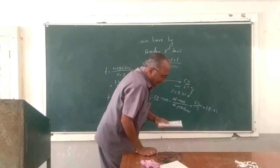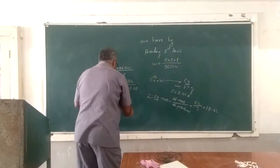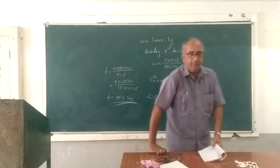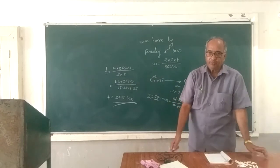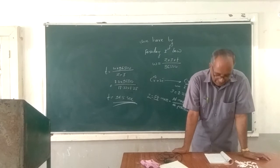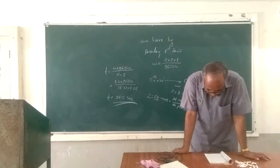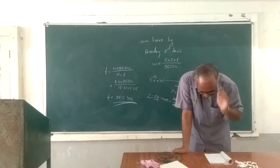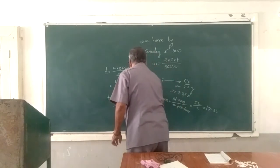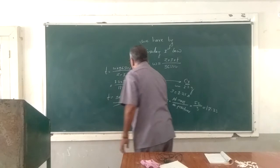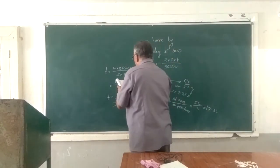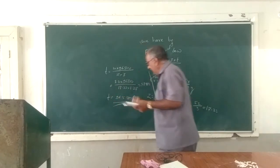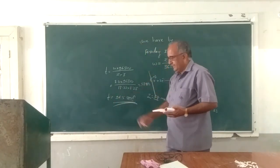When you simplify, the time taken for the deposition of 1.3 grams of chromium is 96.5 seconds. So the time taken for the deposition of 1.3 grams passing 1.25 amperes of current is 96.5 seconds. In terms of the calculation: 52791 divided by 60 gives 96.50 seconds.